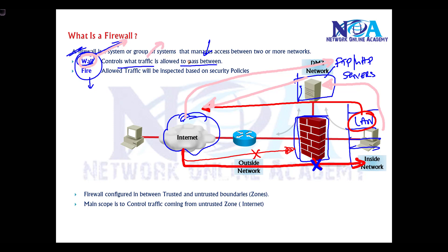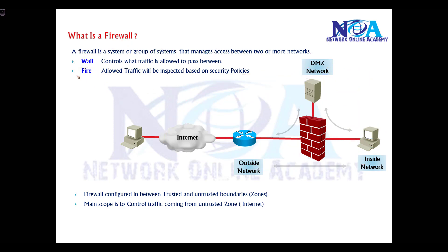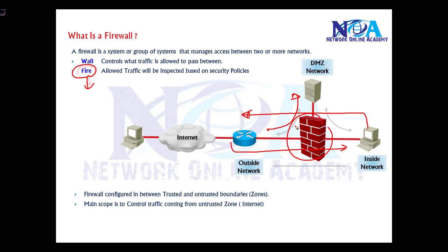The firewall controls what traffic is allowed and what is not. All traffic moving between the LAN and the internet is inspected based on security policies. We configure security policies, and based on those policies, traffic is either allowed or denied.